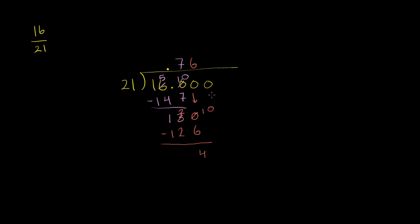Now let's bring down another 0. 21 goes into 40. Well, almost two times but not quite, so only one time. 1 times 21 is 21. And now let's subtract. This is a 10, this becomes a 3. 10 minus 1 is 9, 3 minus 2 is 1.